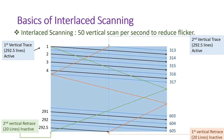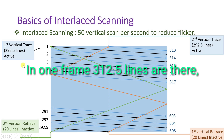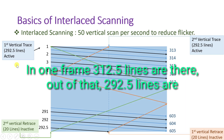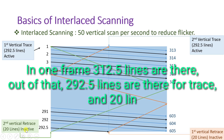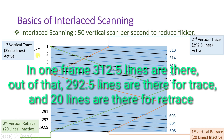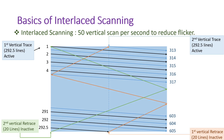That is how vertical scanning happens. The total 625 lines are bisected into four regions: Region A is the first vertical trace with 292.5 lines; Region B is the first vertical retrace with 20 inactive lines. Then there is a second vertical trace with 292.5 lines, and a second vertical retrace with 20 inactive lines. Each frame thus has 312.5 total lines — 292.5 active and 20 inactive.